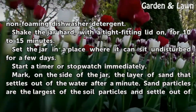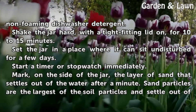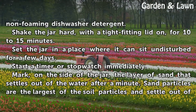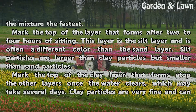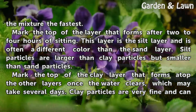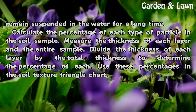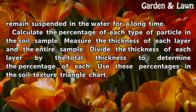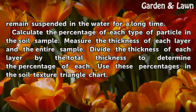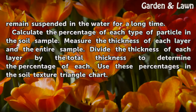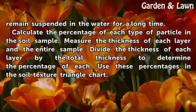Set the jar in a place where it can sit undisturbed for a few days. Start a timer or stopwatch immediately. Mark, on the side of the jar, the layer of sand that settles out of the water after a minute. Sand particles are the largest of the soil particles and settle out of the mixture the fastest. Mark the top of the layer that forms after two to four hours of sitting — this is the silt layer, often a different color than the sand layer. Silt particles are larger than clay particles but smaller than sand particles. Mark the top of the clay layer that forms atop the other layers once the water clears, which may take several days. Clay particles are very fine and can remain suspended in the water for a long time. Calculate the percentage of each type of particle by measuring the thickness of each layer and dividing by the total thickness. Use these percentages in the soil texture triangle chart.